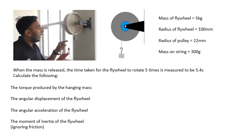I've given you the radius of the flywheel, the radius of the pulley. We've got 300 grams hanging on this string. When the mass is released, the time taken for the flywheel to rotate five times is measured to be 5.4 seconds. There'll be a mark on the flywheel, and you can actually count how many times it goes round in a certain time. Well, it's easier actually to time how long it takes to go round a certain number of times.